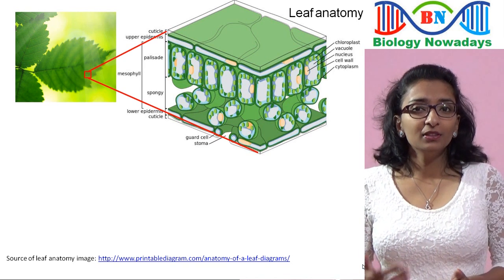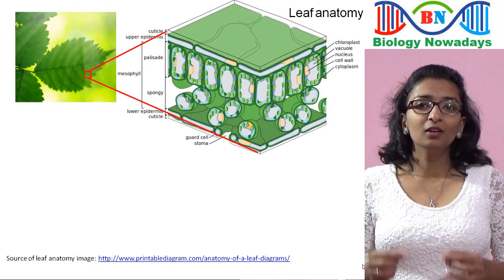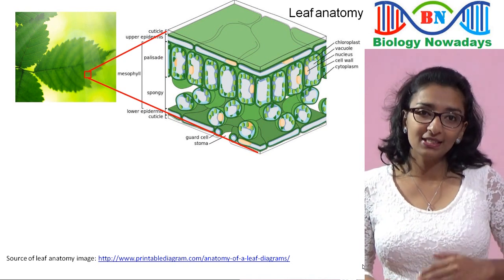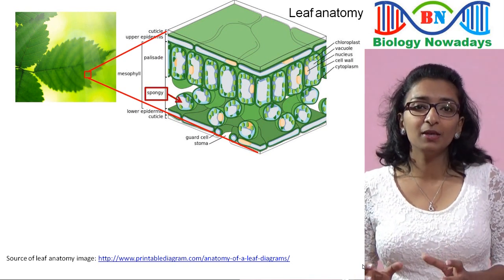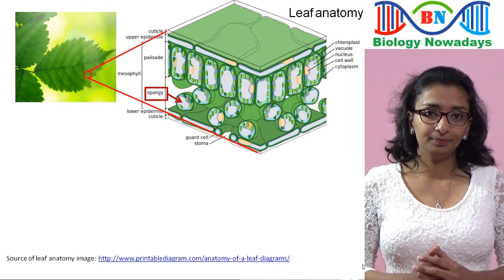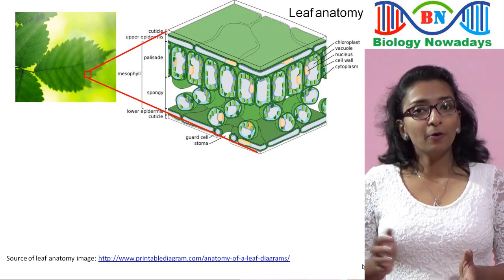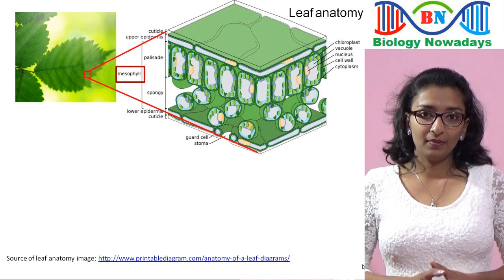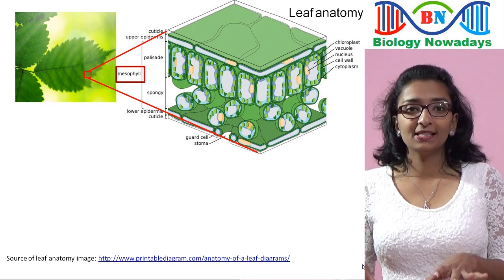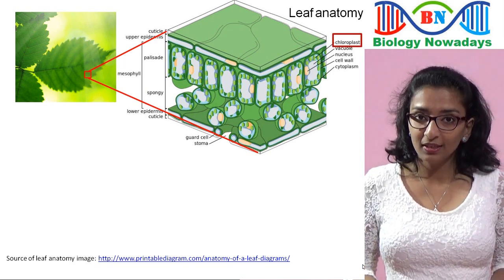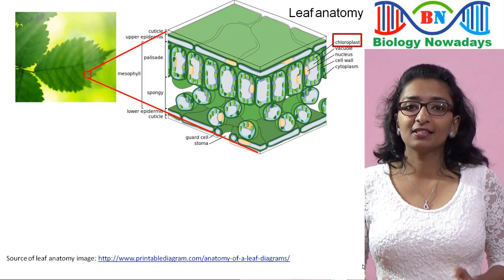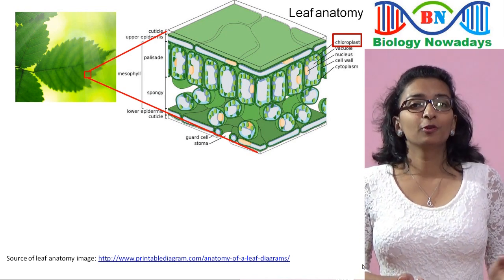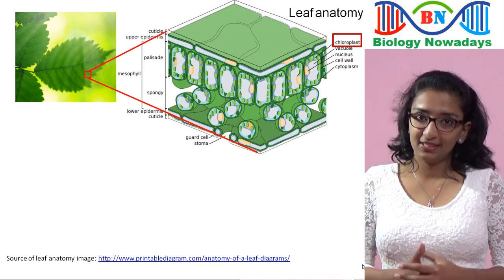Here, below the upper epidermis, we can see vertically elongated palisade parenchyma cells. Below the palisade tissue layer are the layers of oval-shaped spongy parenchyma cells. Palisade and spongy parenchyma cells together form the mesophyll tissue in leaves. Even though both contain chloroplasts, palisade parenchyma cells contain more chloroplasts than spongy parenchyma, and most of the photosynthesis takes place in the palisade cells.